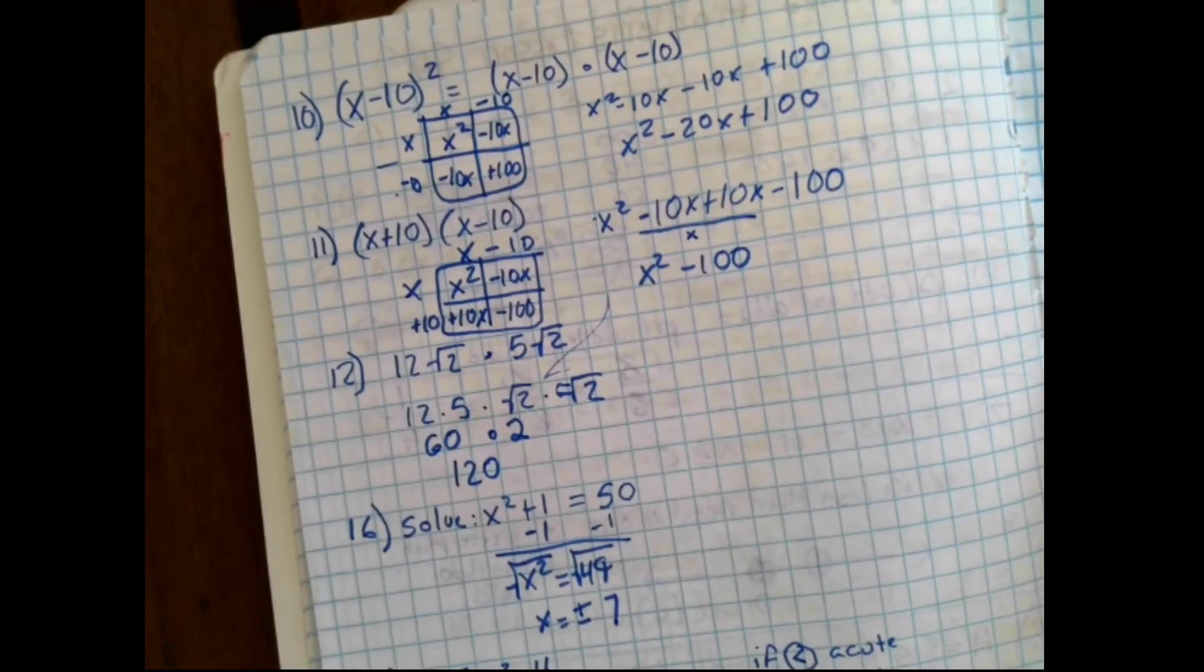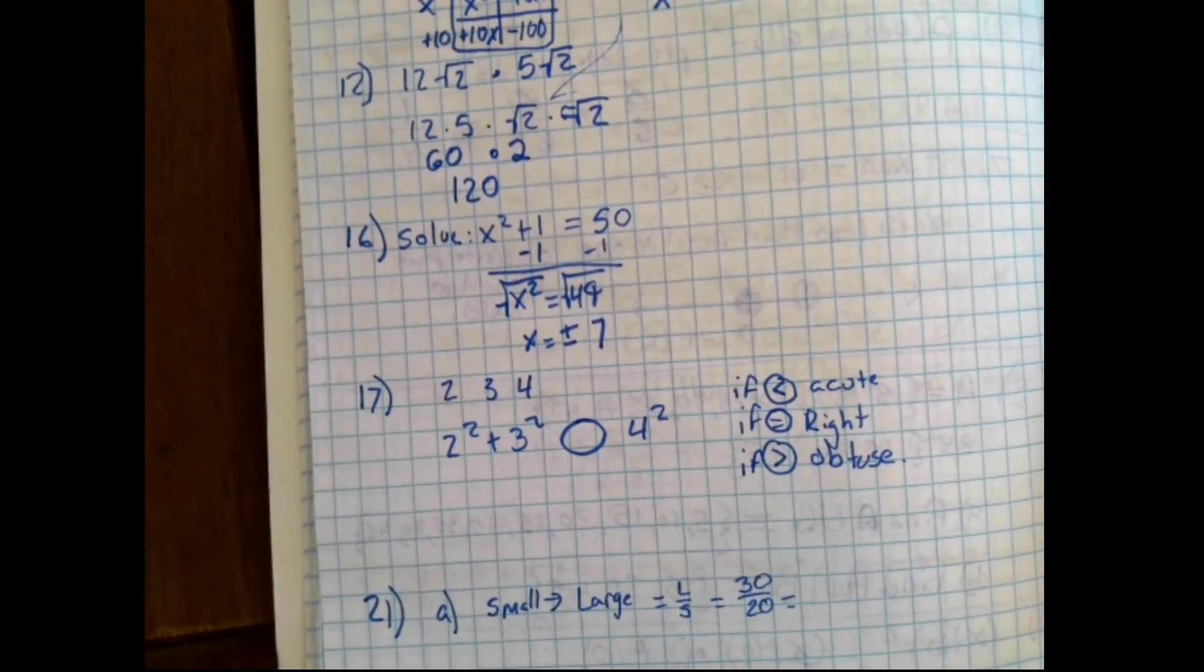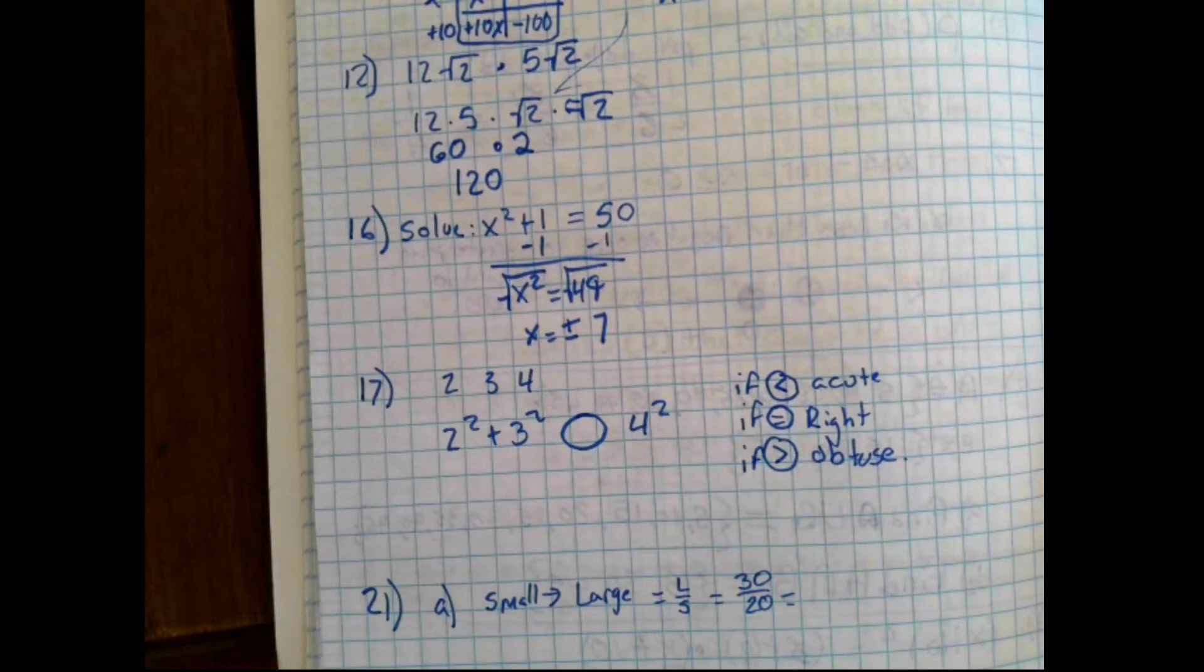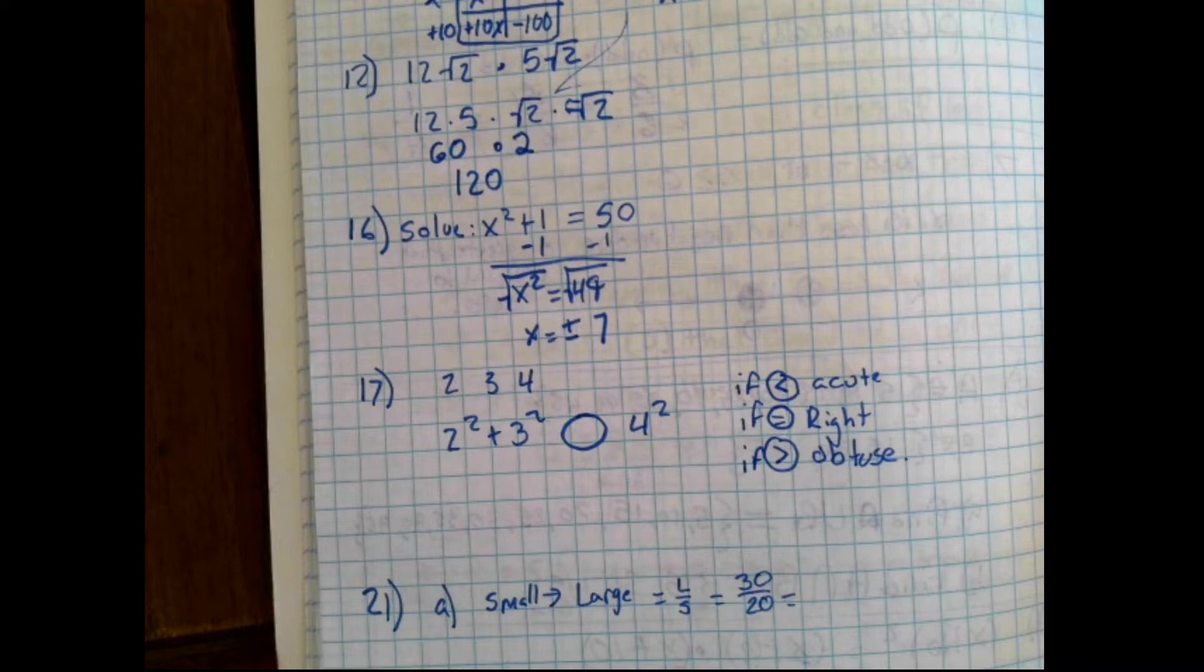Question 17 asks us about a triangle. It says that there's a triangle that has side lengths 2, 3, and 4. And it says, is that triangle acute? Is it right? Or is it obtuse? Now, you may be asking yourself, how would I know this? And I'll tell you. You can set up a problem similar to the Pythagorean theorem. Where you take the two smaller sides and you multiply them by themselves. You square them and then add them together. And you take the longest side and you square that. And you find its answer. And then, if the sum of the two smaller sides squared is less than the square of the longest side, it's acute. If it's equal to the square of the longest side, it's a right triangle. And if it's greater than, it is an obtuse triangle.